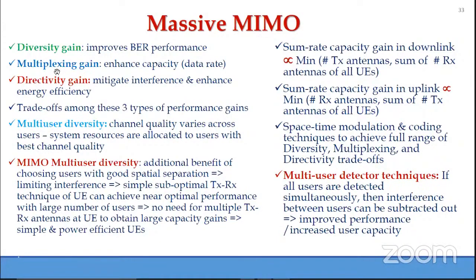The second gain is multiplexing gain: with multiple parallel paths between multiple transmitting and receiving antennas, we can enhance capacity and data rate. The third gain is directivity gain — the large antenna array at the base station can be configured using beamforming to achieve very high directivity, confining all radiating energy to narrow beams, giving high energy efficiency and interference mitigation.